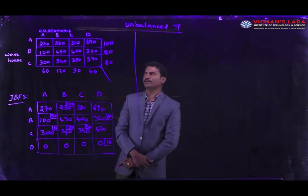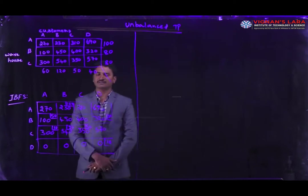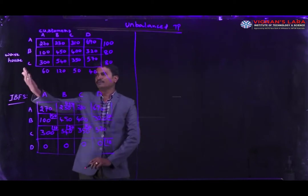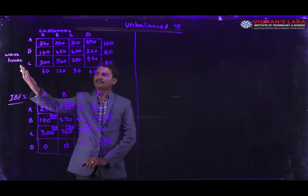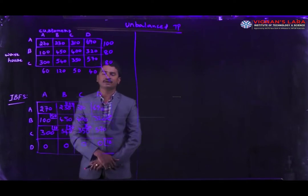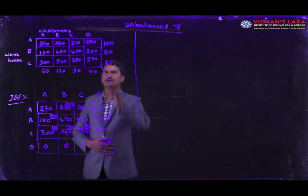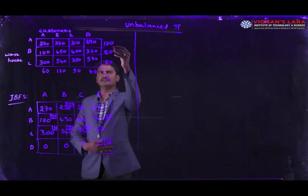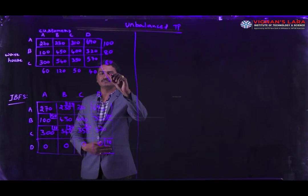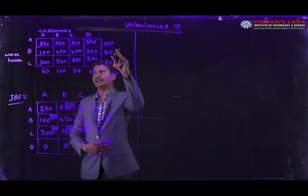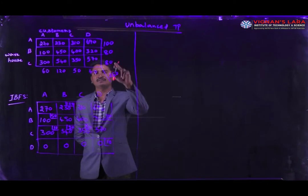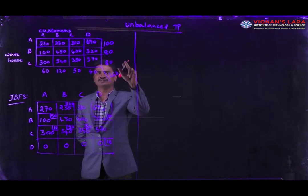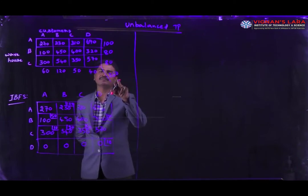Here I have taken one example. We have four customers and three warehouses. We are supplying the commodity from the warehouse to customers. Total supply is 260 units: first warehouse has 100 units, second warehouse has 80 units, third warehouse has 80 units, totaling 260 units.